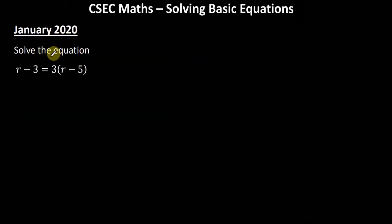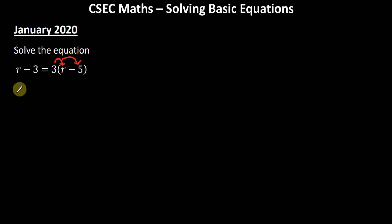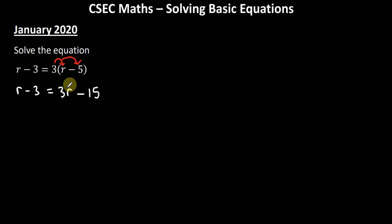Our last question was given on the January 2020 paper and asks us to solve the equation: r minus 3 equals 3 times (r minus 5). We use the distributive law to expand the bracket, giving us r minus 3 on the left, and 3 times r — which is 3r — minus 3 times 5, which is 15, on the right.